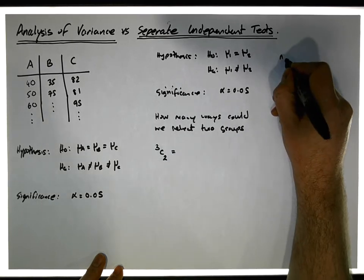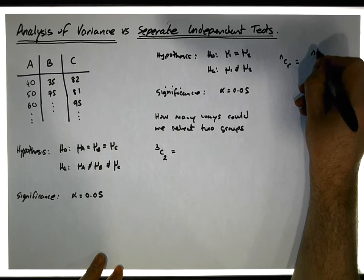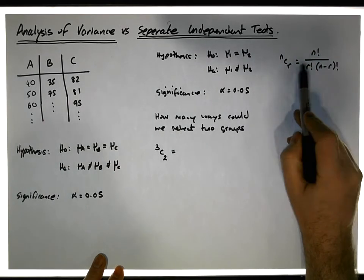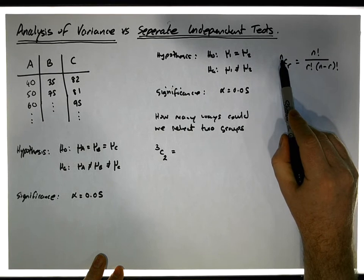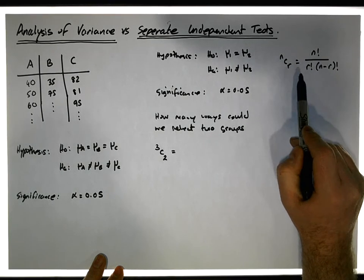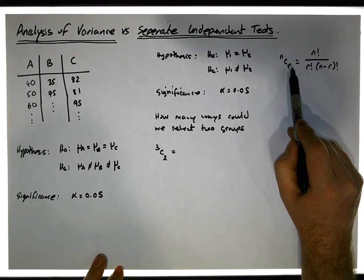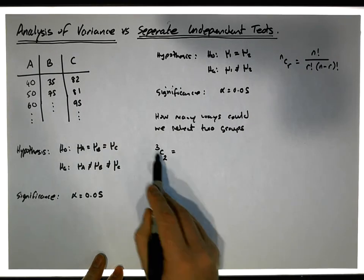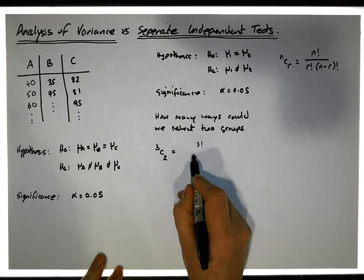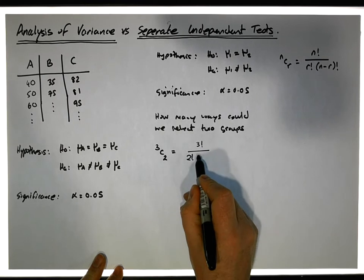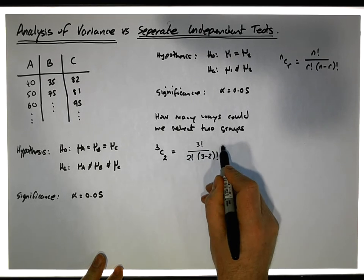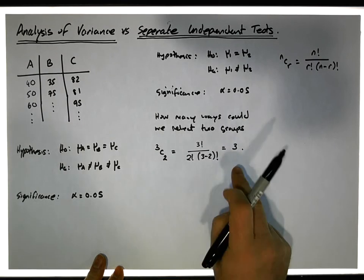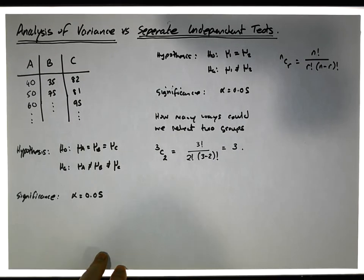The combinations formula nCr equals n factorial over r factorial times (n minus r) factorial. Given n objects, how many ways can we select r objects from them? In this case, it's 3 factorial over 2 factorial times (3 minus 2) factorial, which works out to three. There are three ways to select pairings — two things from those three groups.